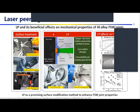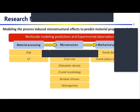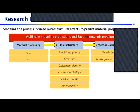We use a crystal plasticity model in this work to capture microstructural evolution during material processing, such as the evolution of precipitate phases, grain size, dislocation density, crystal morphology, and residual stress, as well as the overall joint heterogeneity effect on the mechanical properties of the joints, including tensile behavior and tensile failure mechanisms.